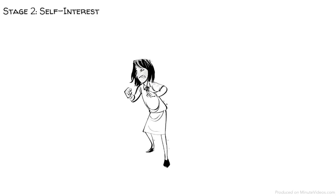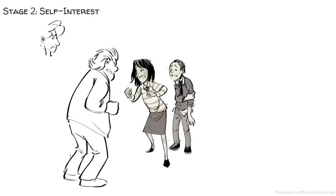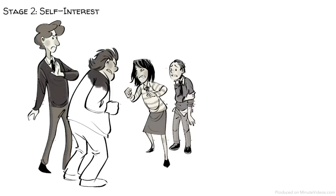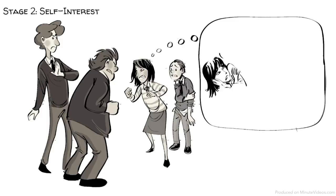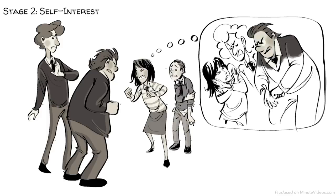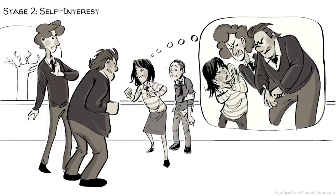At stage two, we are motivated by self-interest. Mary decides to intervene and help Tom. She knows that she might get punished, but she also knows that she could become a victim herself someday. If she helps Tom now, he might help her in the future. She is asking herself: what's in it for me?